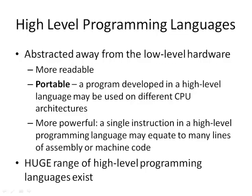High-level languages are abstracted away from the low-level hardware to make code more readable and more portable. If you use a programming language like C or C++, you could write the program once and in principle compile it to run on different computers with different types of CPU. They're also more powerful in that a single instruction in a high-level language may equate to many lines of assembly or machine code. There is a huge range of high-level programming languages that exist.